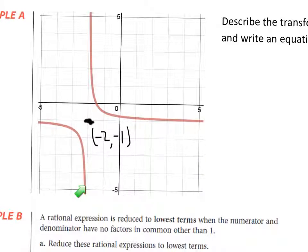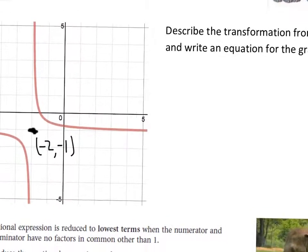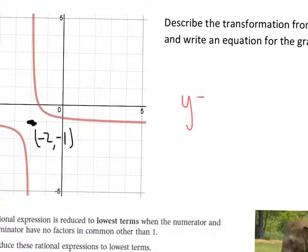So that means our final equation here is going to be y equals... Now, our stretch is going to go on top of our fraction, which we said was 0.5. And that left 2 means we add 2 on the inside. Now on the inside in this form means with the x in the denominator. And then our minus 1 on the outside brings us down 1.